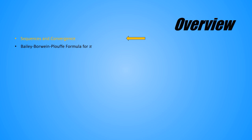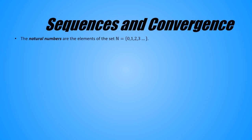In the first segment, I want to talk about sequences and convergence in general before getting to the sequence that we'll use to approximate pi. So I'll start by defining the natural numbers. The natural numbers are the elements of the set zero, one, two, three, and so on.